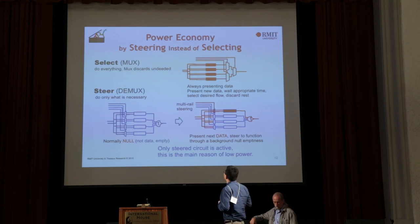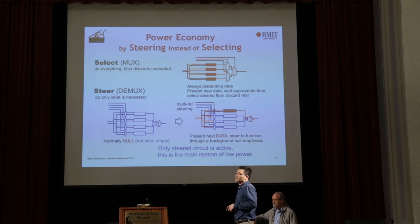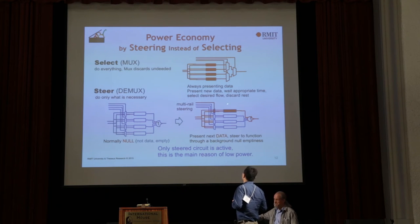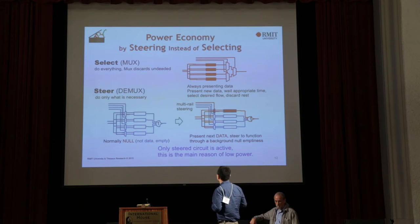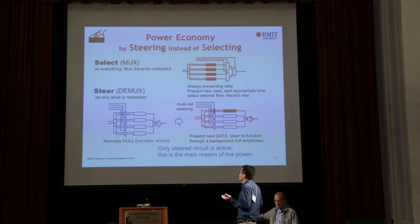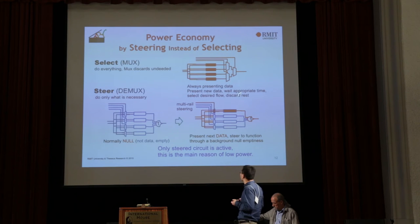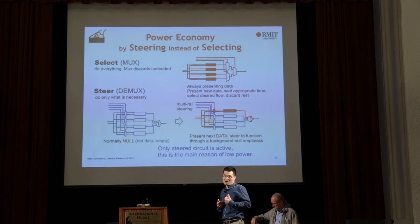This slide introduces power economy by steering instead of selecting. Logically determined design uses a DMUX style rather than MUX style. MUX style does everything then discards the unneeded, always presenting data and selecting desired flow discarding the rest. But DMUX style does only what is necessary — it is normally null, presents the next data, steers it for function through a background null emptiness. Only the relevant combinational logic is active — this is the main reason for our low power.